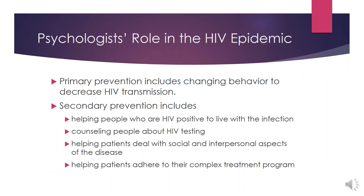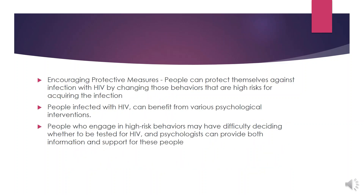During the early years of the epidemic, psychologists contributed to both primary and secondary prevention efforts. Primary prevention included changing behaviors to decrease HIV transmission. Secondary prevention includes helping people who are HIV-positive to live with the infection — this may involve counseling people with HIV testing, helping patients deal with social and interpersonal aspects of the disease, and helping patients adhere to their complex treatment regimes.